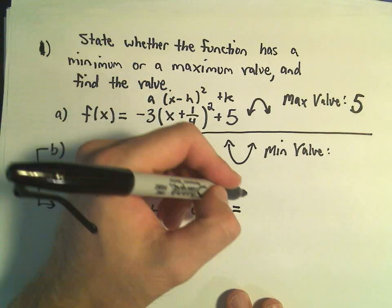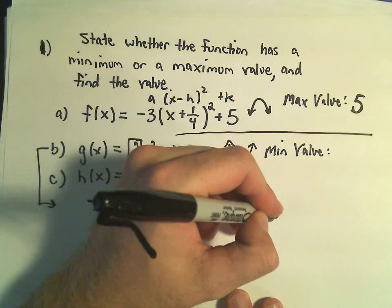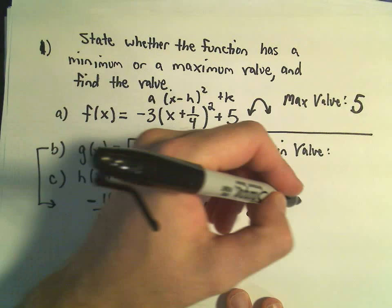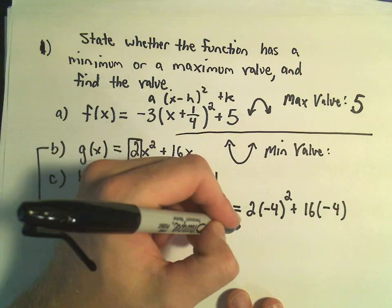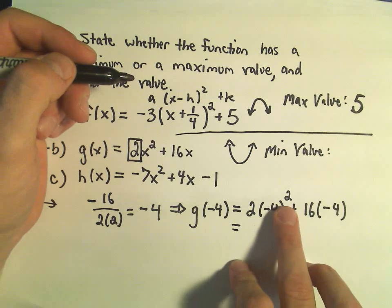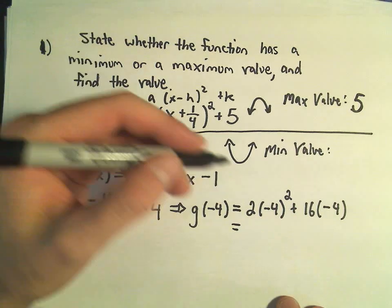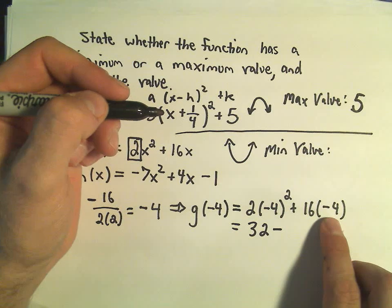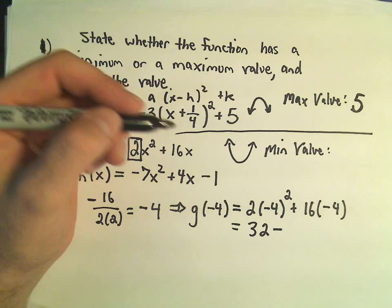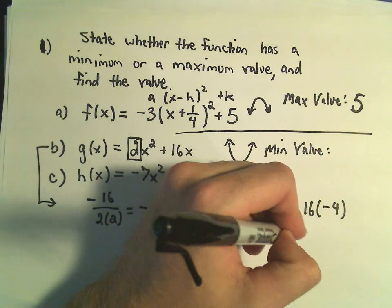g of negative 4 is going to be 2 times negative 4 squared plus 16 times negative 4. Well, let's see, negative 4 squared is 16, 16 times 2 is 32, 16 times 4 is going to be negative 64,